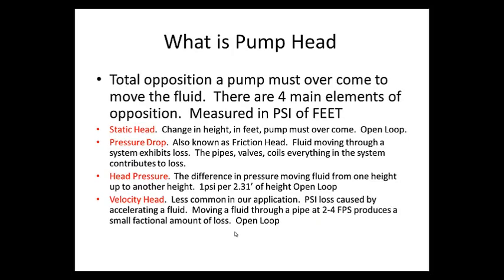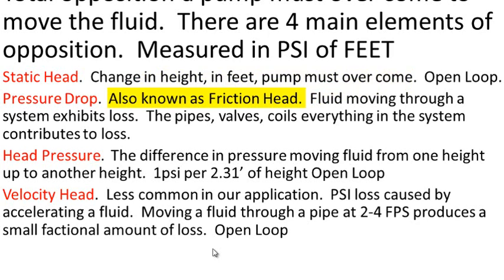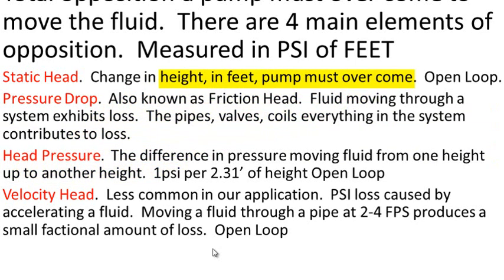When we measure pumps, we always determine pump head, and the pump head is going to tell us how many feet of lift that pump can do. There are four main criteria: static, pressure drop, head pressure, and velocity head. Static head is simply the height that the pump has to overcome. Pressure drop is also known as friction head — these are the lossy losses in the system that you have to account for: valves, pipes, connectors, heat exchangers, the whole bit. Head pressure is the difference required to move that fluid from one height to the other — similar but not quite the same as static head. Static head is the pressure it must overcome from a standing column of water, while head pressure is the force we have to overcome to move that fluid from one height to the other.